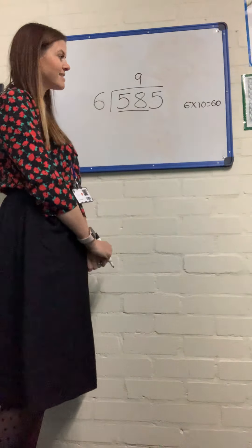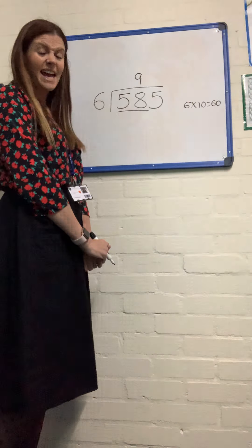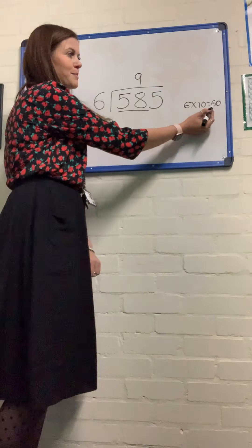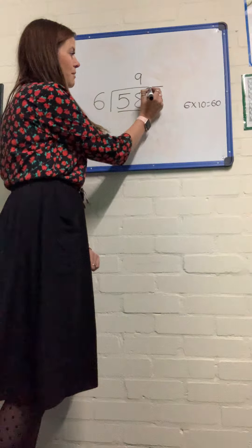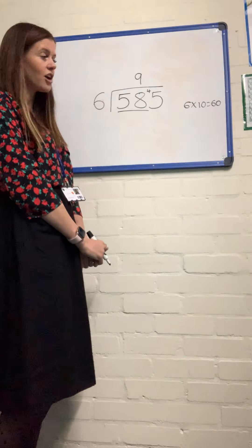So it must mean that there are 9 6s in 58 because 6 times 10 is 60 and that would give me 10 lots. So 9 times by 6 is going to be 6 less than 60. 6 less than 60 is 54, so I have 4 left over. And then it's how many 6s are in 45?